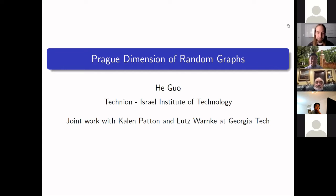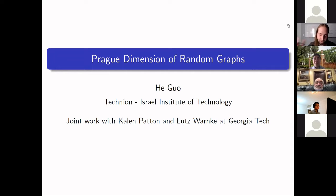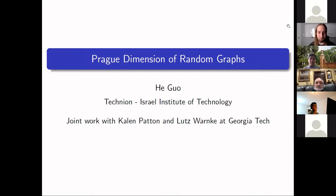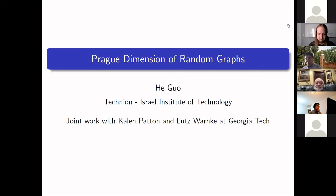Thank you everyone for making it out today. This week we have Hua Guo, who is currently a postdoctoral fellow at Technion, Israel Institute of Technology — it is 9:30 PM there right now. He has very graciously agreed to speak at the seminar at this very late hour. Today he'll be talking about the product dimension of random graphs. Thanks for the invitation. Today I'm going to talk about the product dimension of random graphs, based on joint work when I was a graduate student at Georgia Tech with Kayden Payton and my advisor Luiz Wonky.